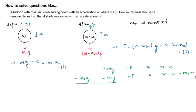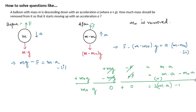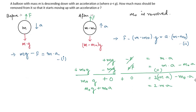Adding the two equations: the F terms cancel giving zero, the mg terms cancel giving zero, and we are left with m₀g. We also get twice of m times a, and an m₀ times a term. Taking the m₀ times a term to the left-hand side, we get m₀ times g plus m₀ times a is equal to 2ma.